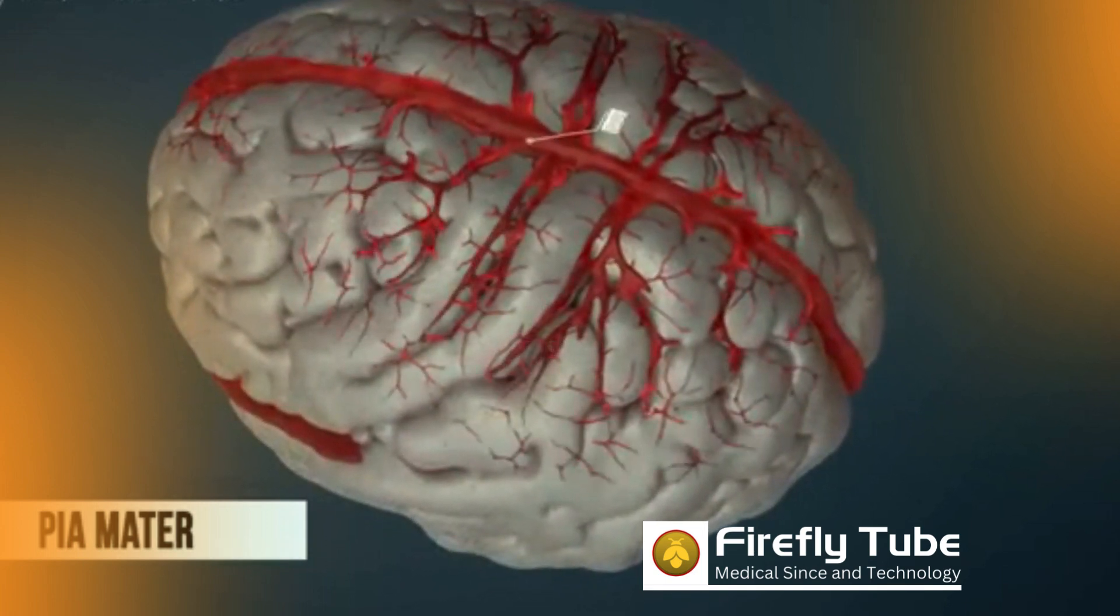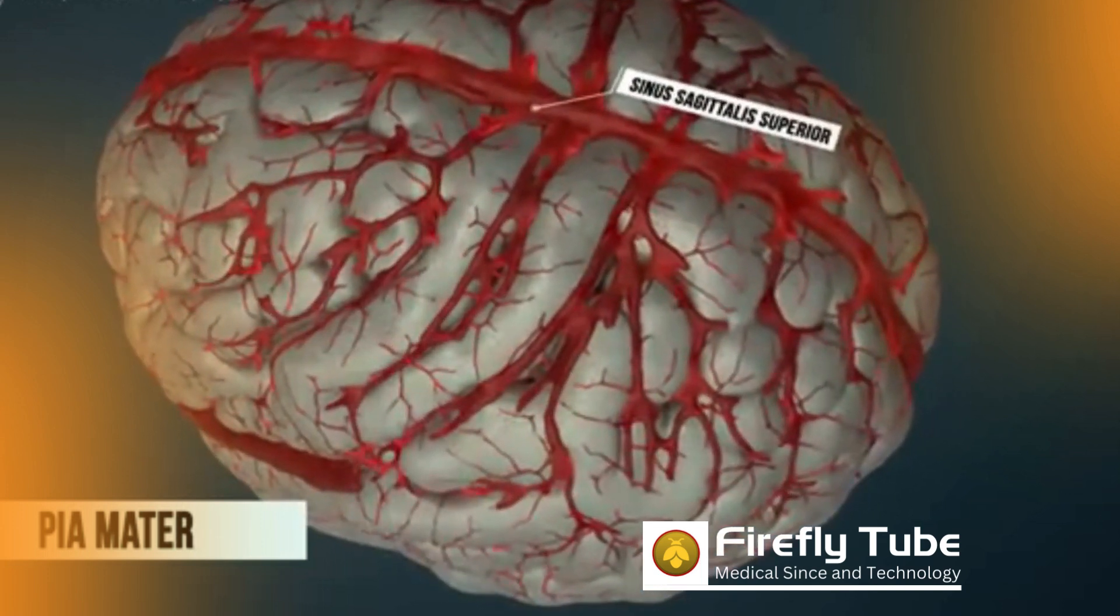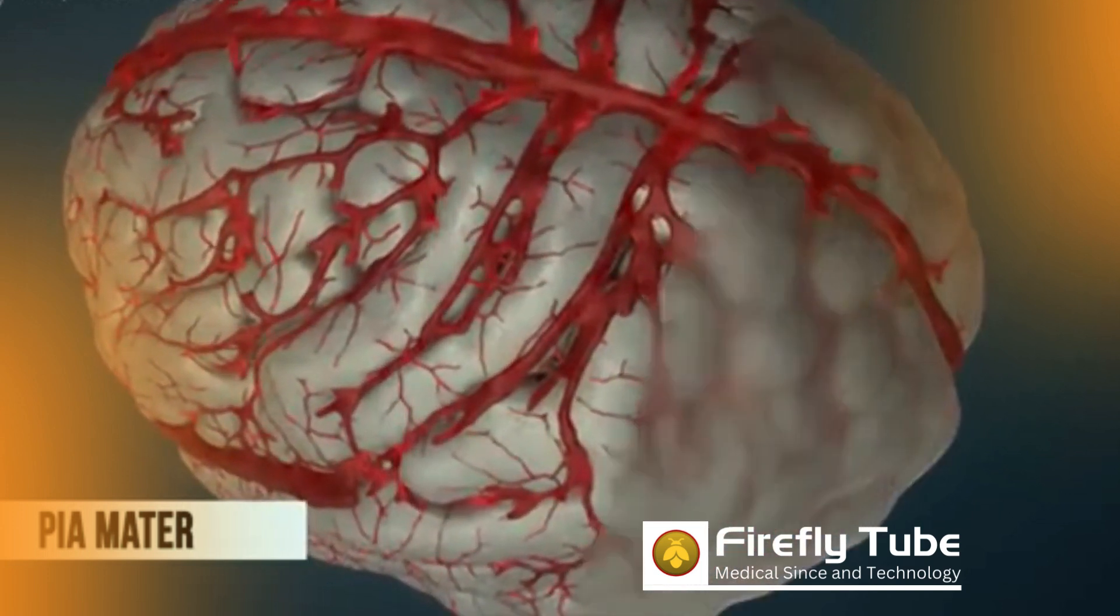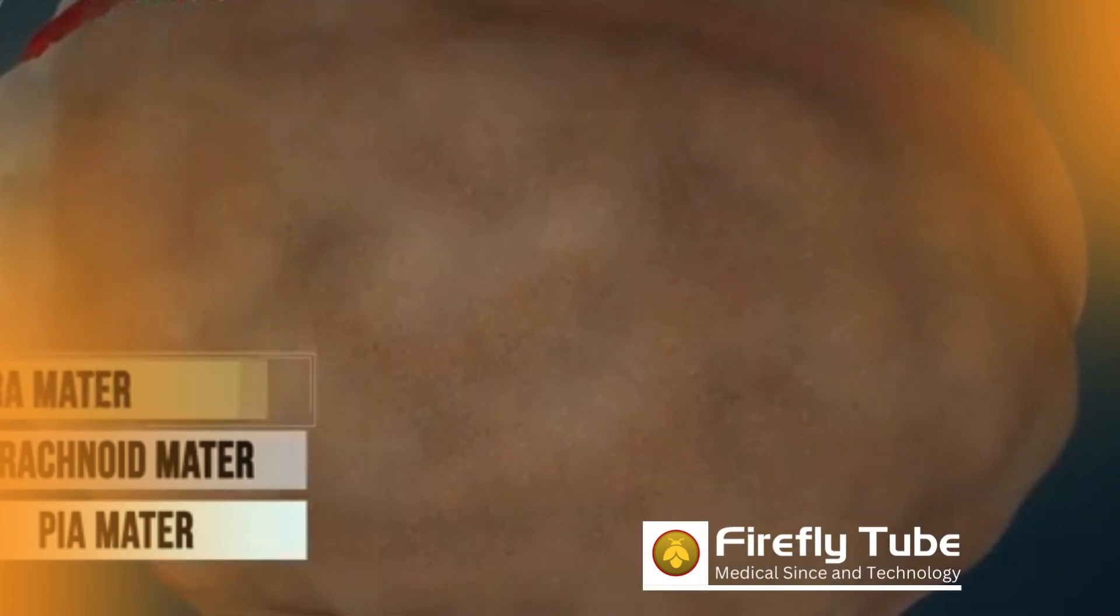Blood vessels between the pia mater and the arachnoid mater supply the brain. The dura mater is very robust and forms the outermost of the three meninges.